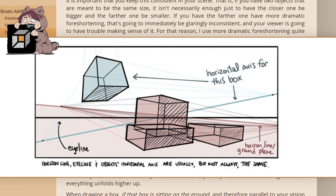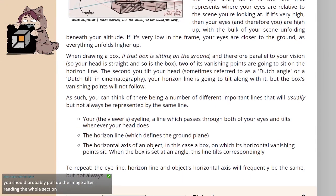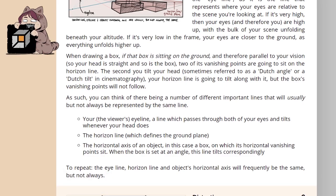The red is the horizon line, ground plane, and then the blue is the horizontal axis for the blue box, and the black line is the eye line. When drawing a box, if that box is sitting on the ground, and therefore parallel to your vision, so your head is straight and so is the box, two of the vanishing points are going to sit on the horizon line. The second you tilt your head, sometimes referred to as a Dutch angle or a Dutch tilt in cinematography, your horizon line is going to tilt along with it, but the box's vanishing points will not follow.